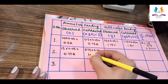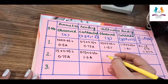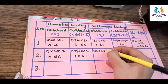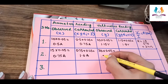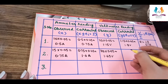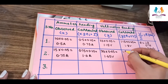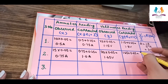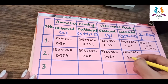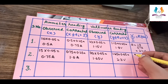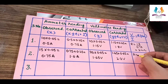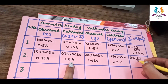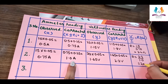The voltmeter reading is 33 divisions multiplied by the least count of 0.05, which equals 1.65 volt. The corrected reading is 1.65 plus the error of 0.65, giving 2.3 volts. Using R equals V upon I, the resistance is 2.3 divided by 1.0, which equals 2.3 ohms.